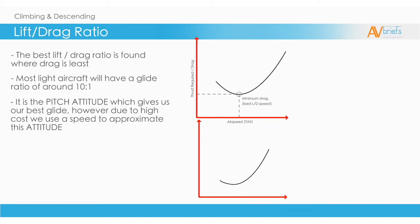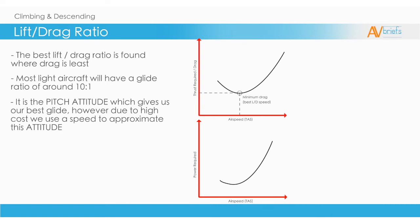We can see here that the best glide range speed is also determined by a line tangential to the power required curve.